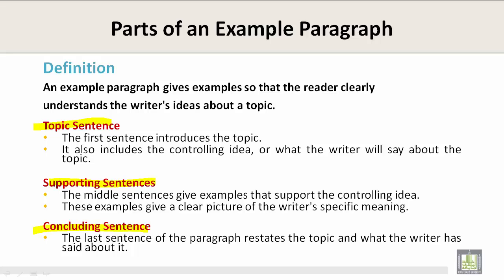Under Topic Sentence, the first sentence introduces the topic. It also includes the controlling idea of what the writer will say about the topic. The supporting sentences are the middle sentences that give examples that support the controlling idea. These examples give a clear picture of the writer's specific meaning. The last sentence of the paragraph restates the topic and what the writer has said about it.